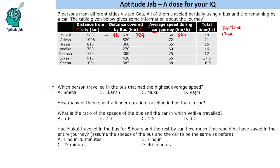The next question asks: how many of them spent a longer duration travelling in bus than in car? This requires one step less than finding the bus speed, but we still need to calculate the duration of the car journey for all persons and then derive the bus journey duration. So this should be the second-last question to attempt.